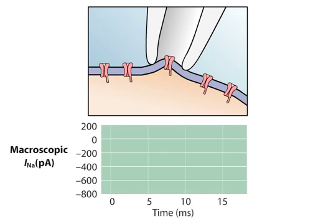A macroscopic current measured from another axon shows the close correlation between the time courses of microscopic and macroscopic sodium currents, reflecting the opening, closing, and inactivating of channels.